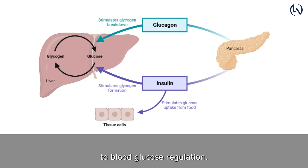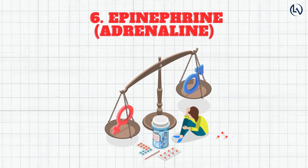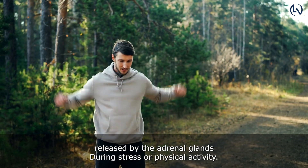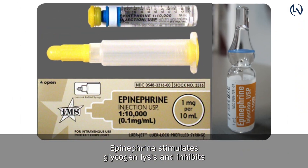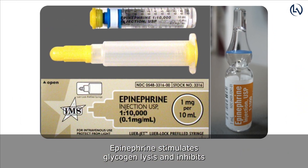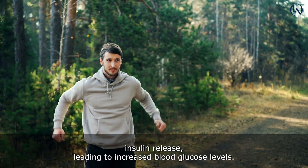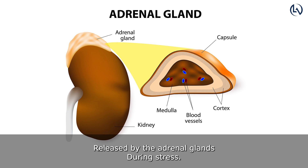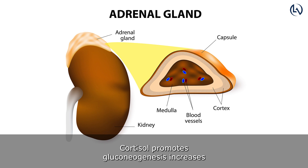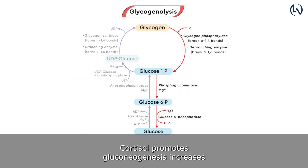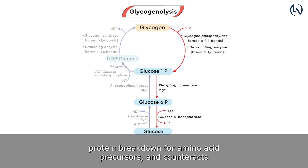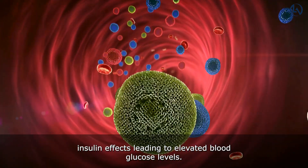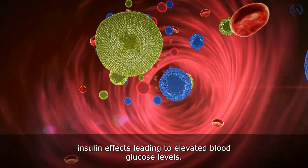Hormonal Regulation: Besides insulin and glucagon, other hormones contribute to blood glucose regulation. Epinephrine (adrenaline), released by the adrenal glands during stress or physical activity, stimulates glycogenolysis and inhibits insulin release, leading to increased blood glucose levels. Cortisol, released by the adrenal glands during stress, promotes gluconeogenesis, increases protein breakdown for amino acid precursors, and counteracts insulin effects, leading to elevated blood glucose levels.